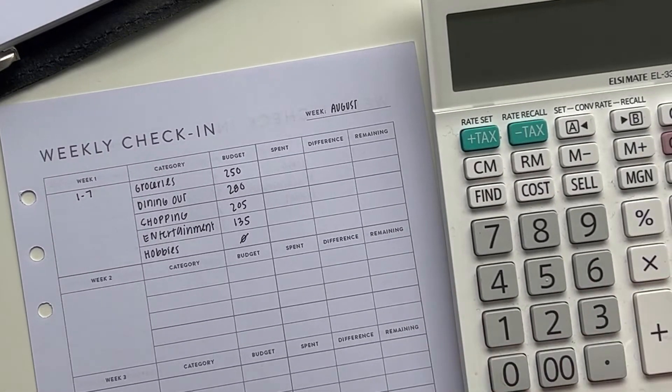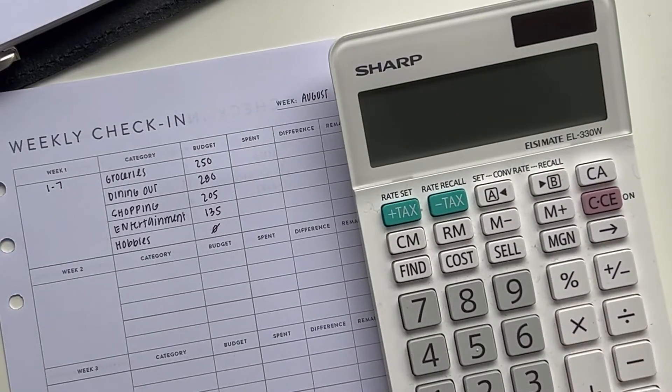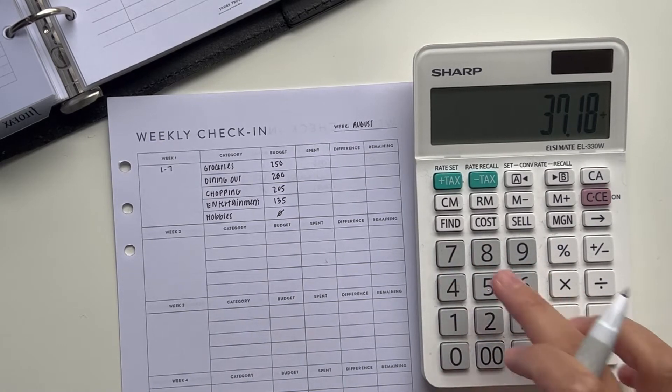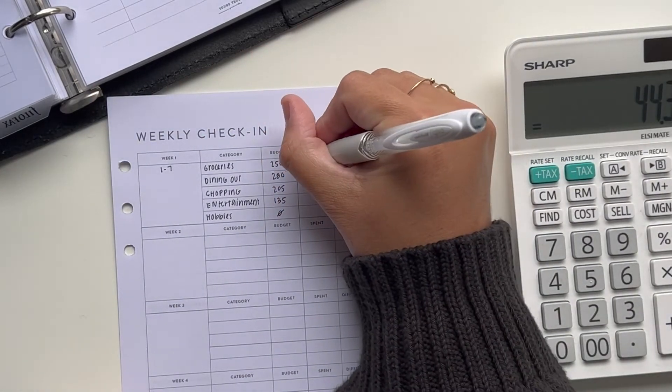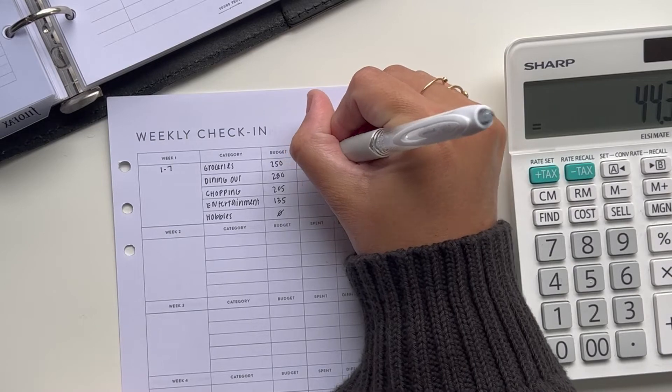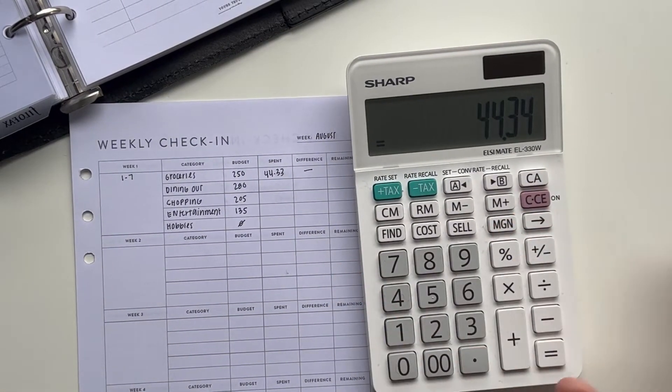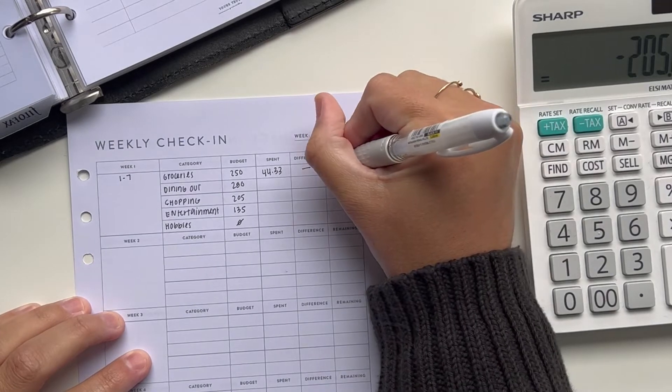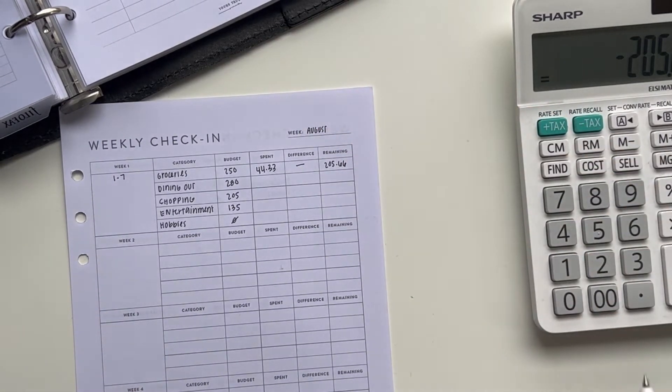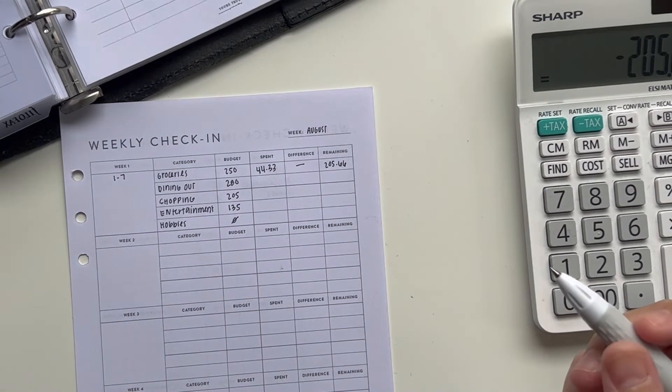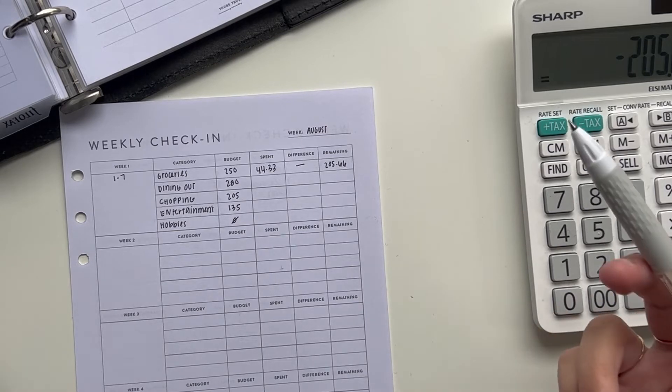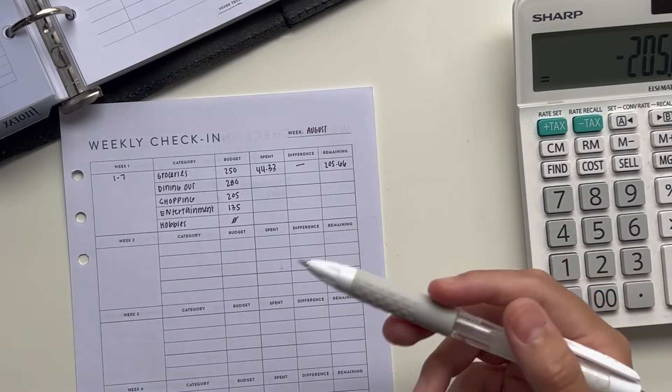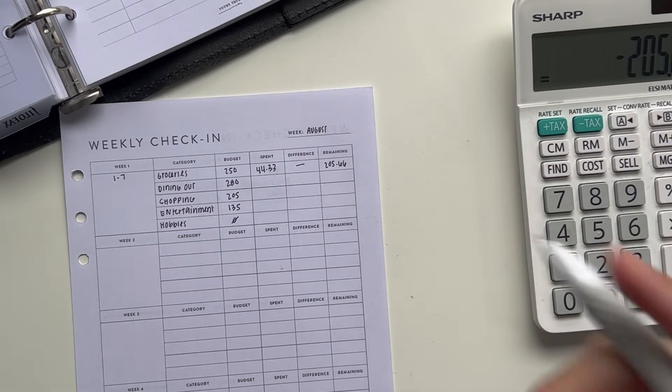So let's start with groceries. I budgeted $250 for the month. I actually only have two transactions for groceries this week. So we're at $37.18 for one and $7.16 for the other, which means we have spent $44.33. And then the remaining would be I have $205.66 left in my grocery category for the entire month. Now for my first paycheck, which is essentially the first two weeks of the month until the 15th, I budgeted $100 for my grocery spending. And I am within that budget and on track to not go over. So that's very exciting.